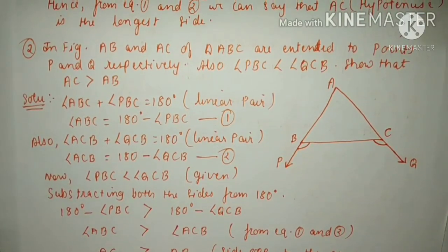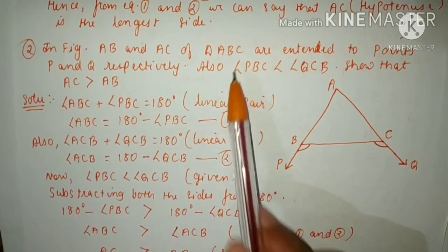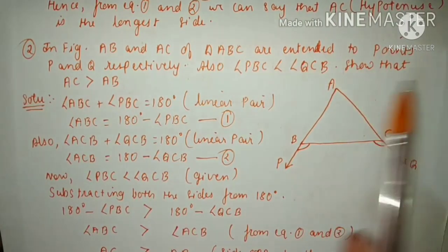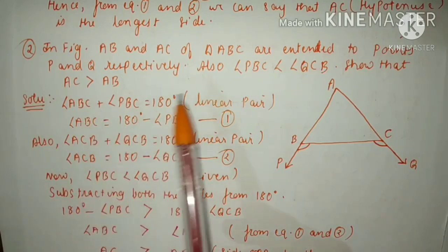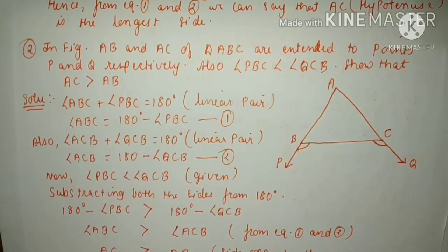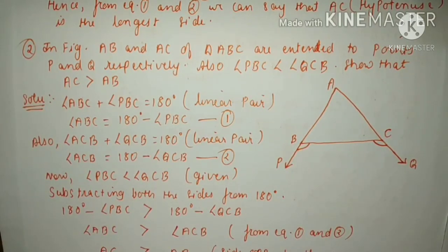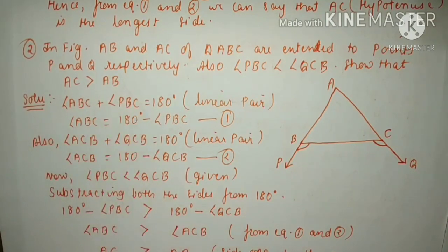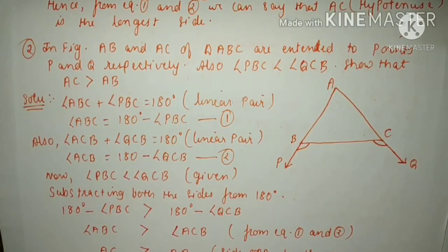Now see the second question. In figure, AB and AC of triangle ABC are extended to points P and Q respectively. Also, angle PBC is greater than angle QCB. We have to show that AC is greater than AB — that means this side AC is greater than this side AB. Let's see the solution.